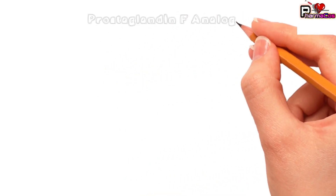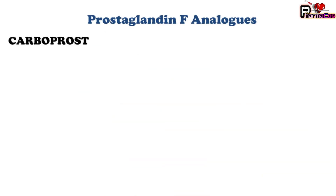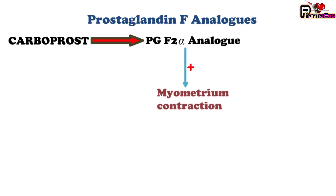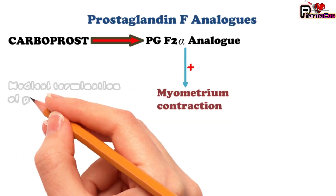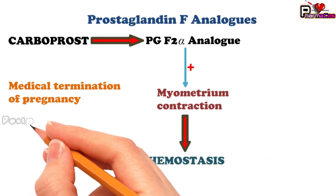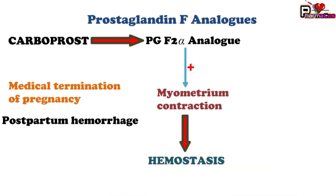The next category is prostaglandin F analogs. One drug is carboprost, a prostaglandin F2 alpha analog. It acts on FP receptors — receptors for prostaglandin F2 — thereby increasing myometrial contraction. Uterine contraction can also be increased by carboprost, so this drug can be used for medical termination of pregnancy. Additionally, because of increased myometrial contraction, it can prevent bleeding after delivery, producing hemostasis — that is why this drug is used for postpartum hemorrhage.